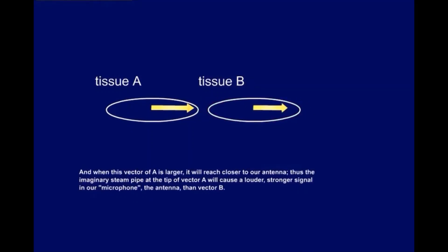And when this vector of A is larger, it will reach closer to our antenna. Thus, the imaginary steam pipe at the tip of vector A will cause a louder, stronger signal in our microphone, the antenna, than vector B.